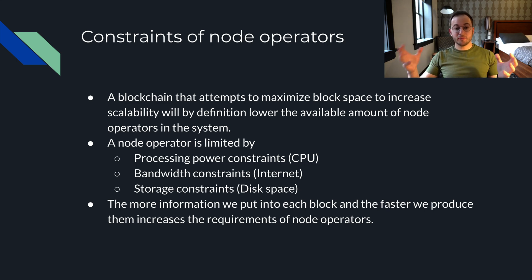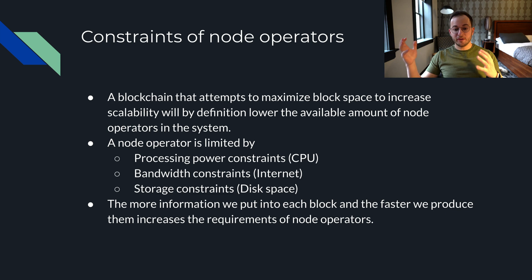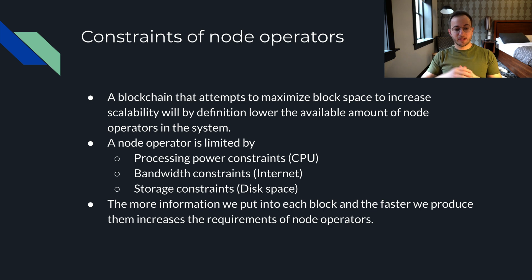Node operators live in a world of constraints, and in general those three constraints are: processing power constraints — basically the CPU of the node or machine; bandwidth constraints — how fast and reliable the internet is; and storage constraints — what the disk space is like on the machine the node is running on. The more information we put into each block and the faster we produce them, the more it increases the requirements on node operators, and these three parameters have to be optimized.